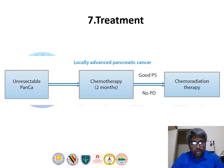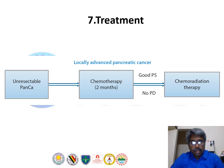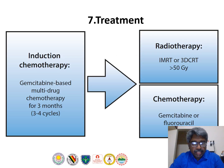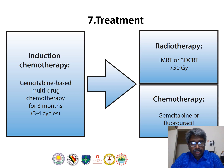For locally advanced pancreatic cancer, the standard approach is to give two months of initial chemotherapy, then perform response assessment. If the patient remains in good performance status and there is no progressive disease, we proceed with chemoradiation. Induction chemotherapy is usually gemcitabine-based multi-drug chemotherapy for three to four cycles, followed by consolidation radiotherapy or continuing chemotherapy.